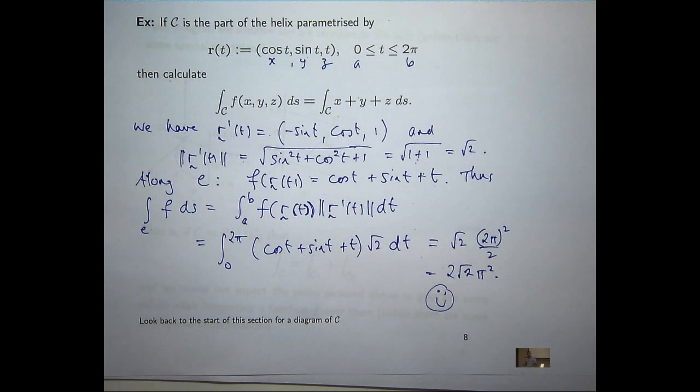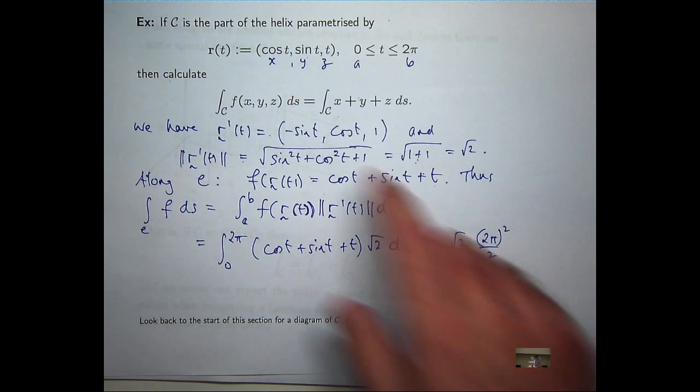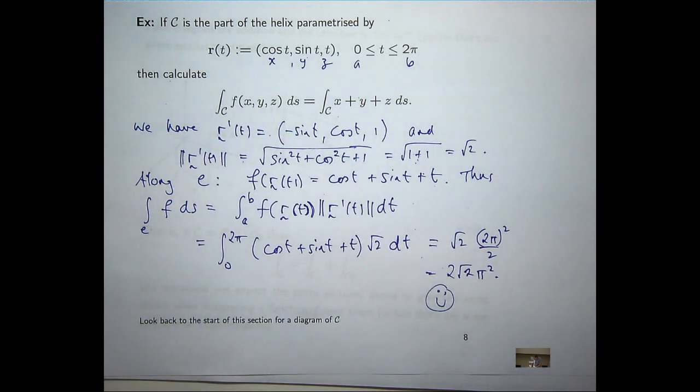Any questions so far? Okay, so to put this into some perspective, let's say the helix was a spring or a coil, and f was, say, a density function. What you've produced there is a measure of the total mass of the coil or the spring.